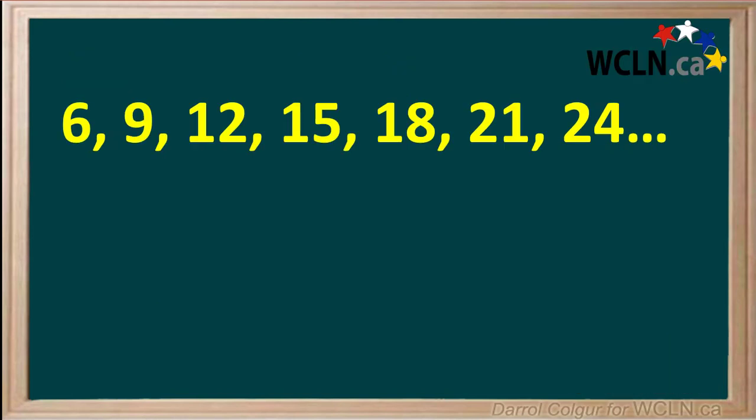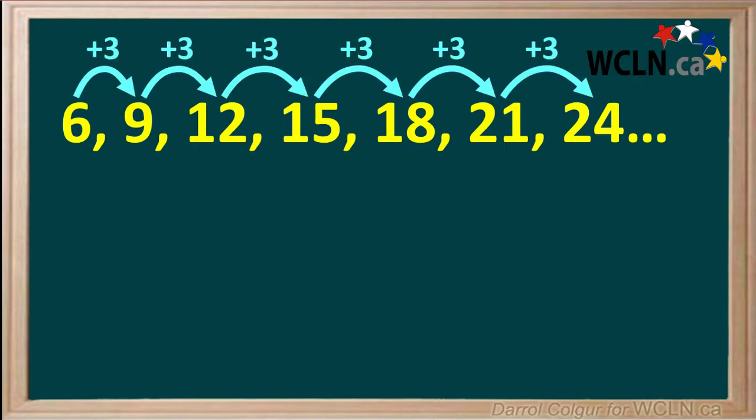Let's consider this sequence. We see that we need to add 3 to each term in order to get to the next term. So we say that the common difference d is equal to 3.